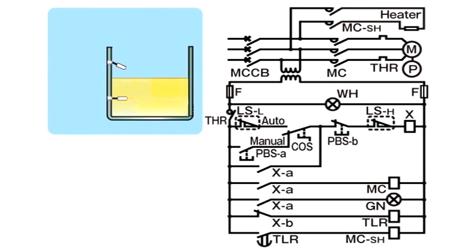If the liquid level falls gradually while the pump is stopped, the L-S-H float goes down and the L-S-H relay is turned on again. However, the motor remains stopped because the X-coil is not excited. If the liquid level falls even further and the L-S-L float also falls, the L-S-L relay turns on.